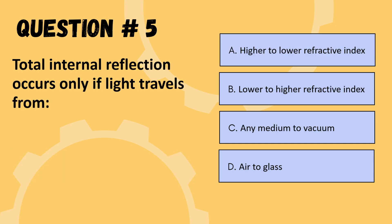Next question: total internal reflection occurs only if light travels from — options are higher to lower refractive index, lower to higher refractive index, any medium to vacuum, or air to glass. The correct option is A: higher to lower refractive index.